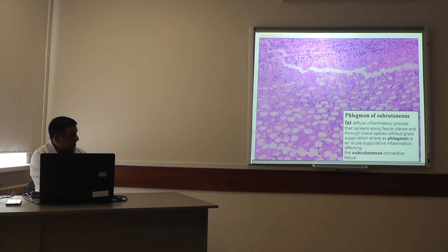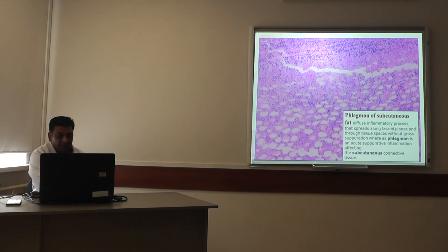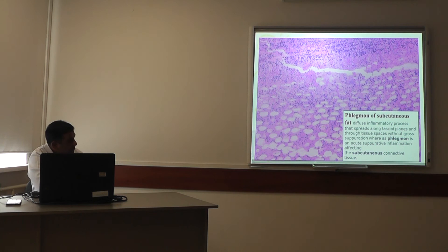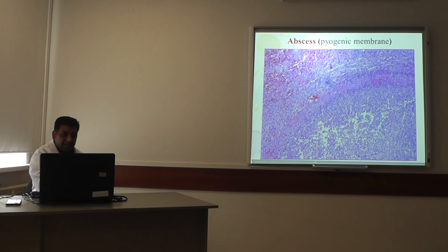Additional slides: a fragment of subcutaneous fat showing a diffuse inflammatory process that spreads along fascial planes and through tissue spaces without suppuration — this is phlegmon, an acute suppurative inflammation affecting the subcutaneous connective tissue. A fragment of subcutaneous fatty tissue is also shown. Finally, an abscess with a pyogenic membrane is demonstrated.